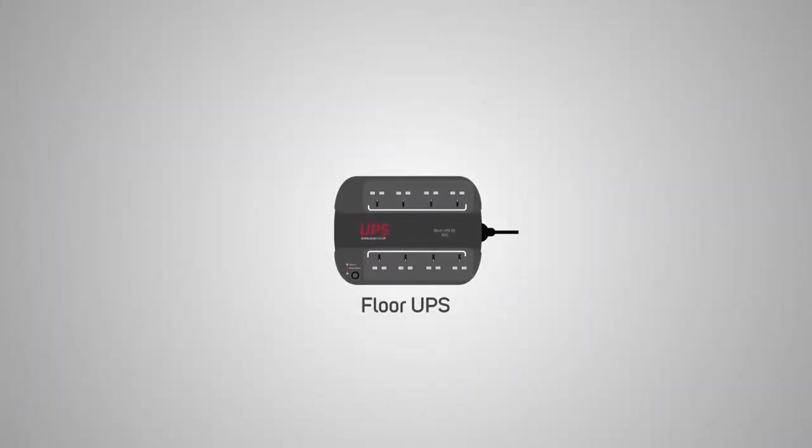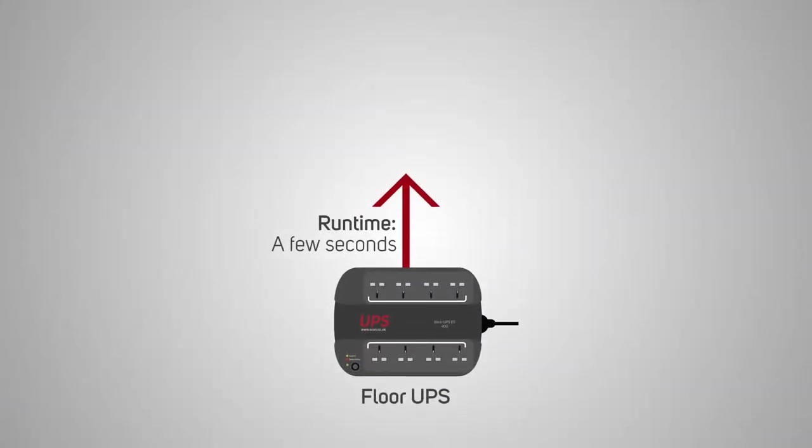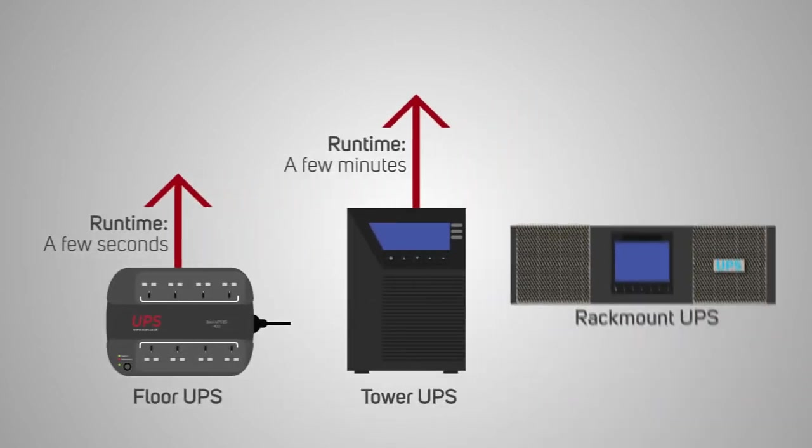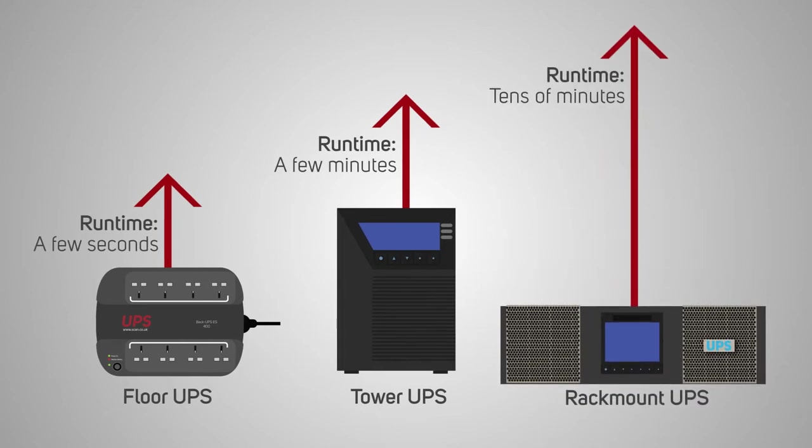UPS protects against blackouts with an internal battery that provides enough power to the system to allow a graceful shutdown — one where ongoing tasks are completed and all files and data can be saved before powering down. In the case of a PC, this may be 30 seconds runtime, allowing you to save your work. But in the case of servers, you may need 5 to 10 minutes runtime to shut down all processes cleanly. The longer the runtime required, the larger the batteries needed.